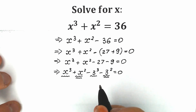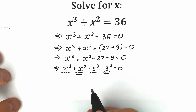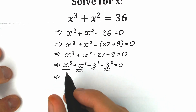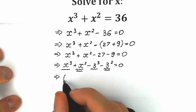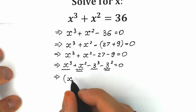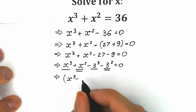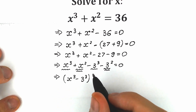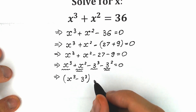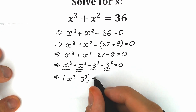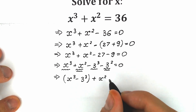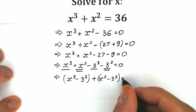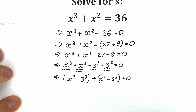Now let's try to group this expression. Let's group our cubes together: (x³ - 3³), and the same with the squares. Adding them gives us (x³ - 3³) + (x² - 3²) = 0.